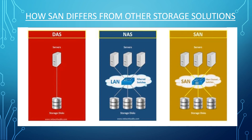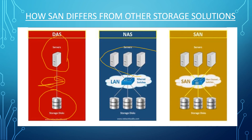Let us see how SAN differs from other storage solutions. We have considered Direct Attached Storage, Network Attached Storage, and Storage Area Network. In Direct Attached Storage, a server is directly connected to the storage disk with no intermediate switches. In Network Attached Storage, an Ethernet switch is used in the LAN to connect to the storage disk. SAN is connected through an intermediate Fiber Channel switch.